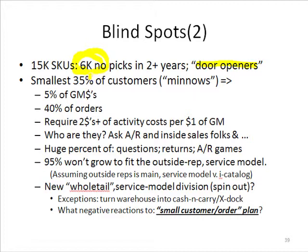He was not happy to hear that. I noticed also that the bottom 35% of all the active customers — let's say they had 1,000 accounts — active accounts were only generating 5% of the margin dollars, but they were delivering 40% of the orders. If you looked at just the variable activity costs — in other words, how much are we spending on inside sales, data entry, warehouse activity, picking, packing, shipping, delivery, et cetera — these customers were chewing up $2 of variable activity costs for every dollar of margin that they were delivering.